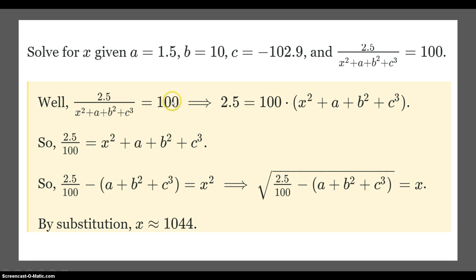We take the denominator and multiply it by both sides of the equation. The reason is to get the x-squared term out of the denominator to isolate it. So now we're here. Then we divide both sides of the equation by 100, and now we're here.